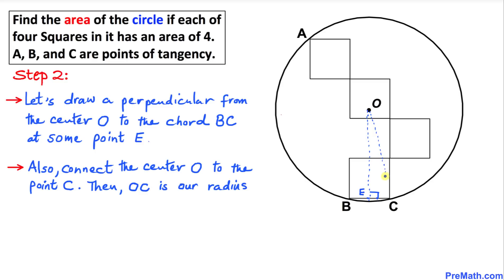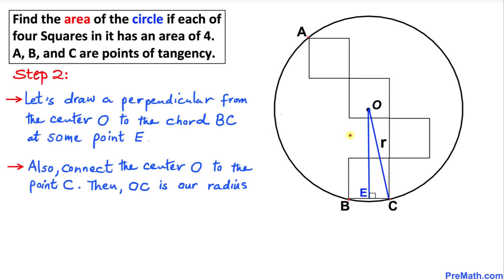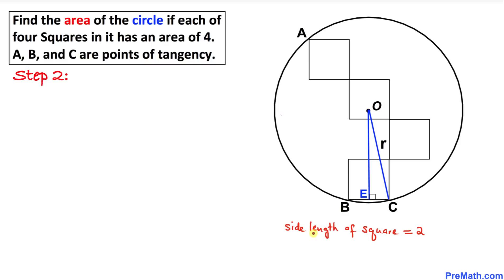We are also going to connect O to the point of tangency C. This gives us our radius r. Here is our much nicer-looking diagram. Keep in mind that the side length of each square is two, which means this chord BC is going to be two units.